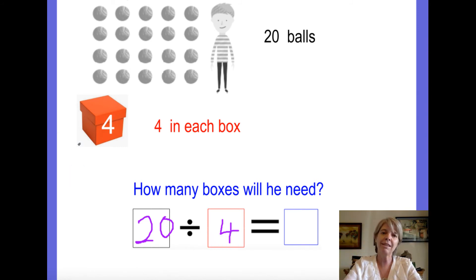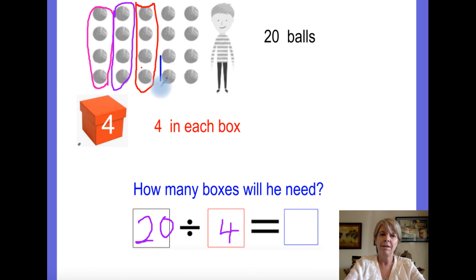So, we're going to share them equally. So, we need to make groups of four. Let's do it together. One. Two. Three. Four. Five. How many boxes will he need? One, two, three, four, five.